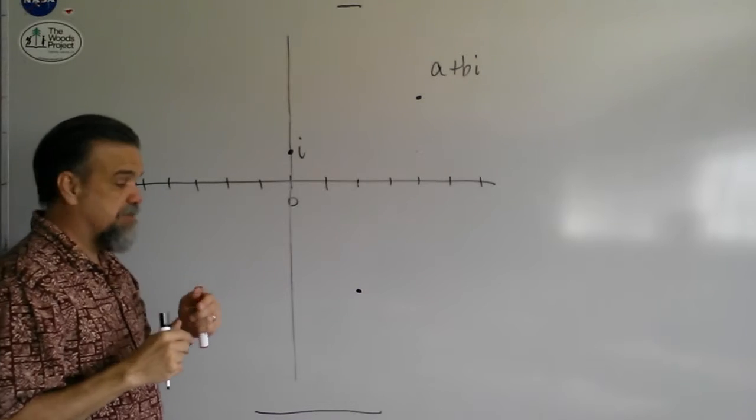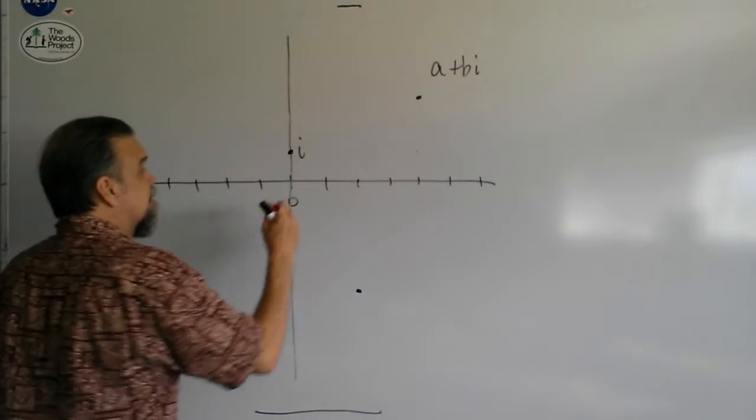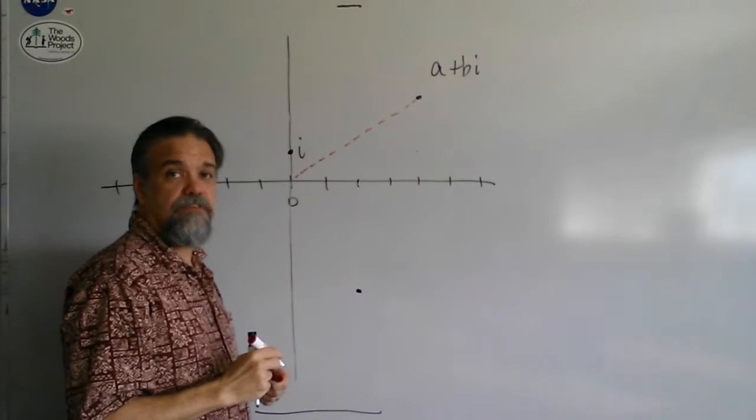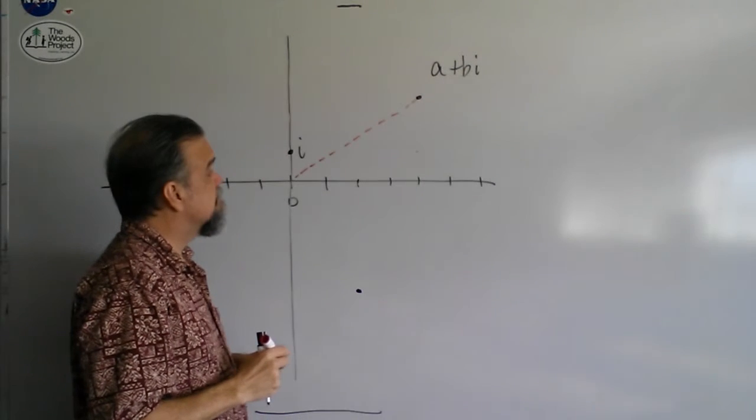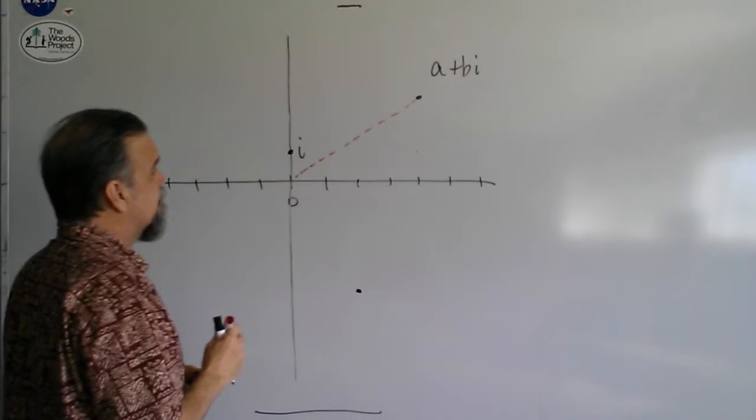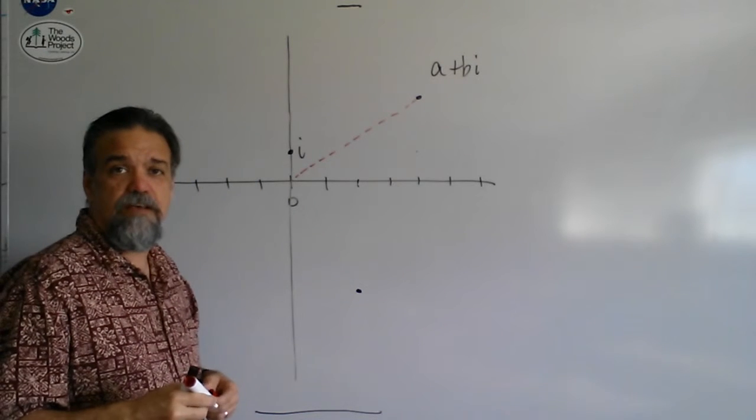But if it's a complex number, then it turns out to be a diagonal distance. That's interesting. And so, the diagonal distance here, how would I measure that? It's easy. I use the Pythagorean theorem.